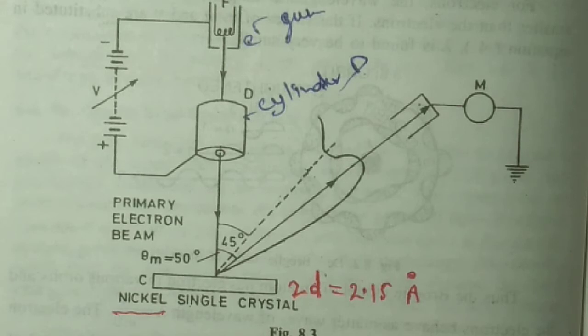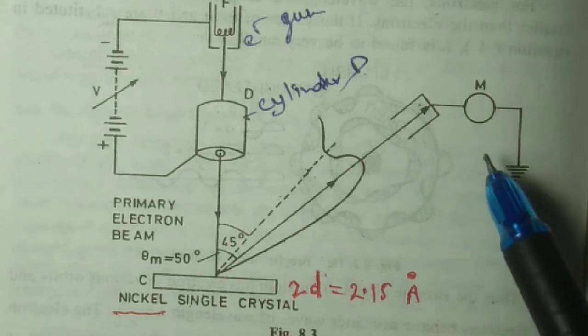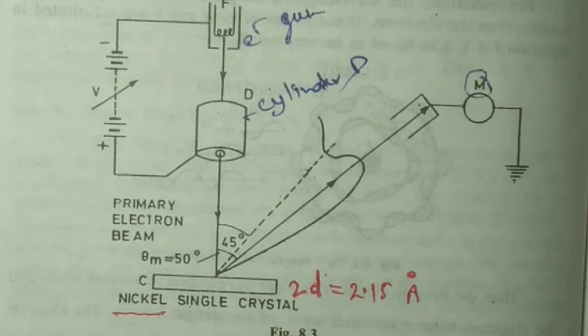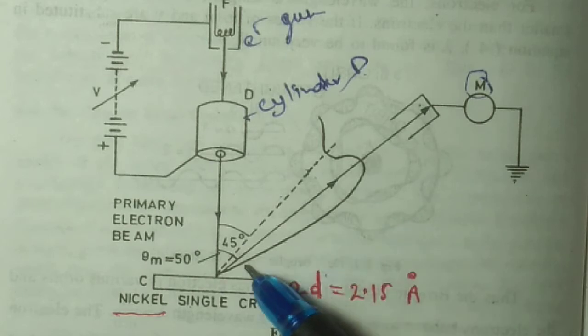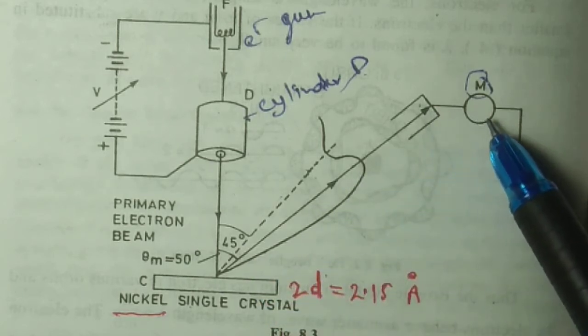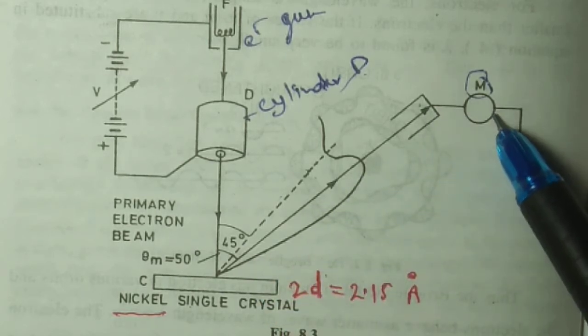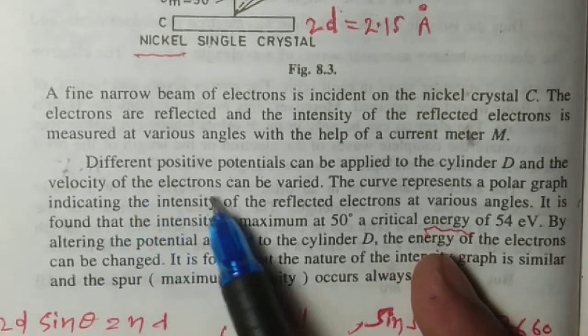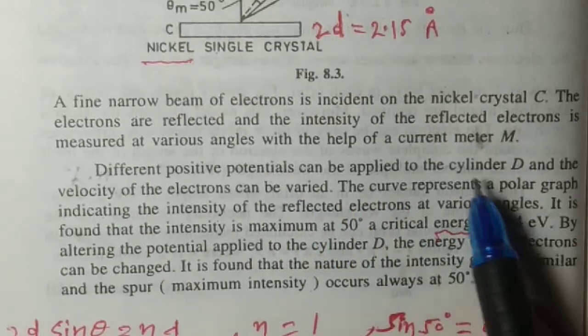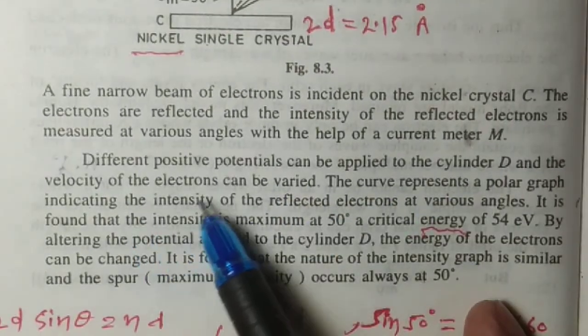These electrons are measured at various angles with the help of a current meter. The number of electrons and the current produced are measured at the current meter.